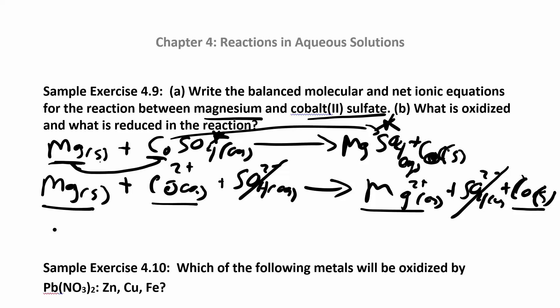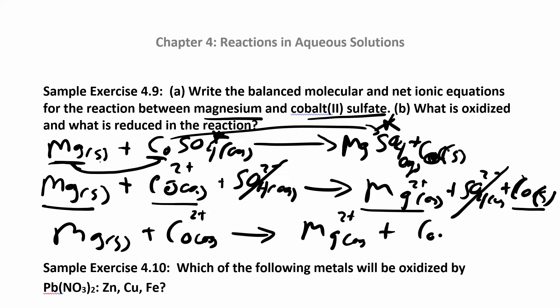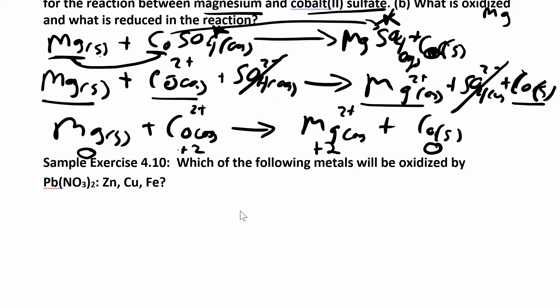The net ionic equation is: Mg solid + Co²⁺ aqueous → Mg²⁺ aqueous + Co solid. Now you can see the redox reaction. Magnesium by itself has an oxidation number of 0; here it's plus two, so magnesium is increasing in oxidation number — magnesium is being oxidized. Cobalt goes from plus two to zero, so that number is decreasing — cobalt is being reduced. One species is oxidized, the other is reduced.